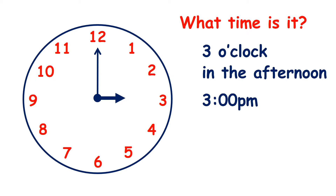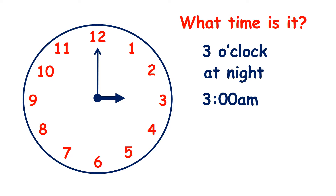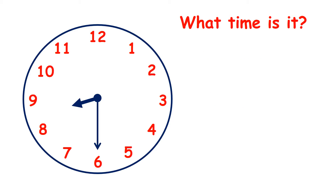If the time has p.m. after it, that means it's after midday. But it might not be 3 o'clock in the afternoon — it could also be 3 o'clock at night, and we could say that it's 3 a.m. If the time has a.m. after it, that means it's after midnight or before midday.